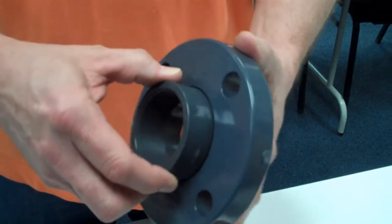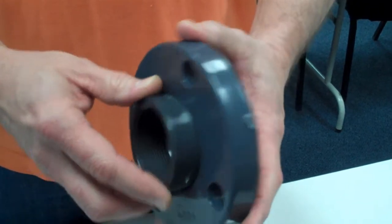These flanges are the Vanstone-style two-piece flanges, which allow for greater installation flexibility.